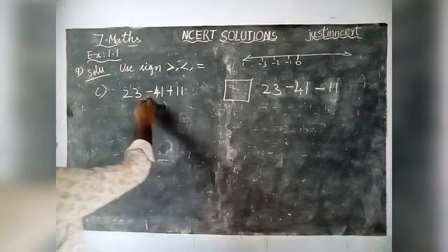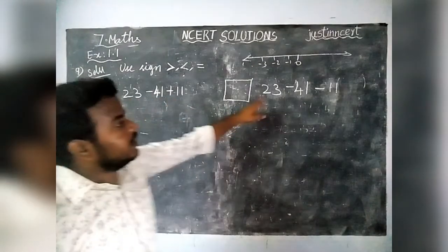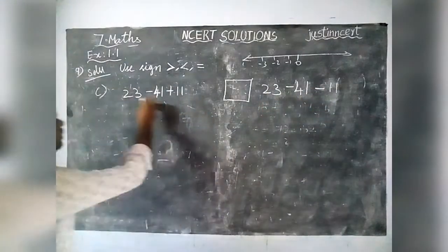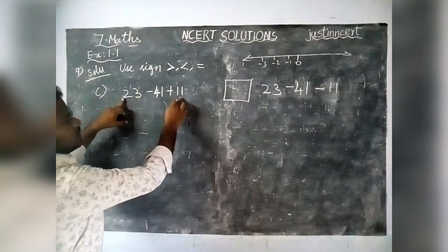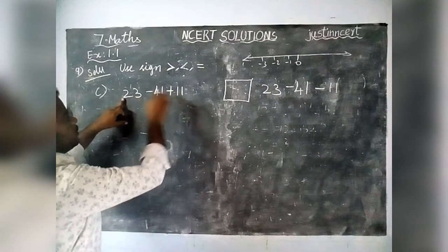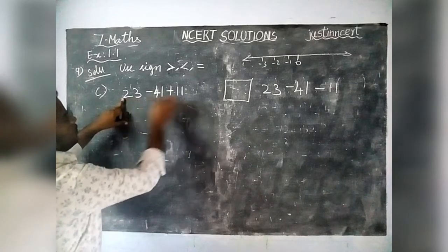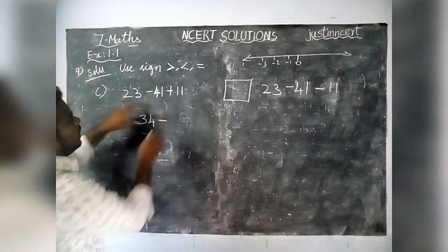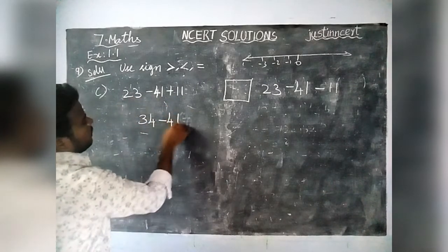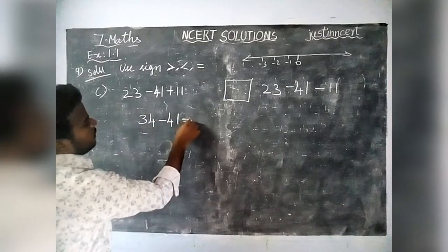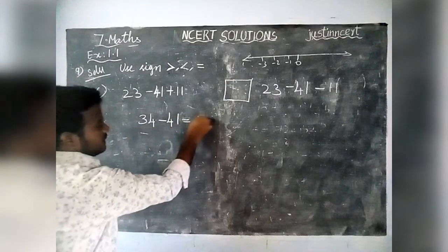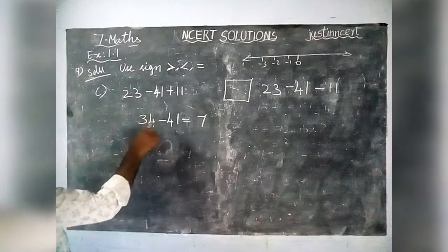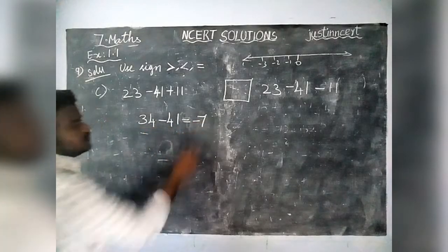Next: 23 minus 41 plus 11. These two, 23 and 11, are positive numbers, so we add them: 23 plus 11 is equal to 34. Then we have 34 minus 41. The difference between 34 and 41 is 7. The greatest number is 41, and in front of 41 there is a minus sign, so the answer is minus 7.